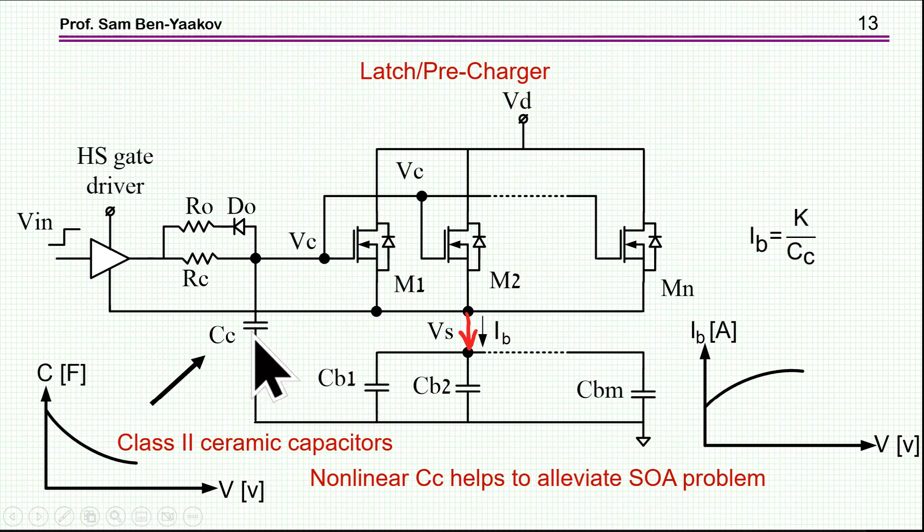Now, if this capacitor is non-linear, for example, X7R having a high capacitance at low voltage and then it goes down, this will be very beneficial because when the capacitance is higher, then the current here will be lower. So this actually helps to prevent the problem of the safe operating area. So the current will start low and then it will go high.